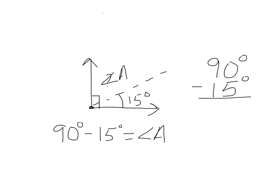So I subtract 90 minus 15. So I need to regroup. And 10 minus 5 is 5. And this is 8. 8 minus 1 is 7. So that means that angle A equals 75 degrees.